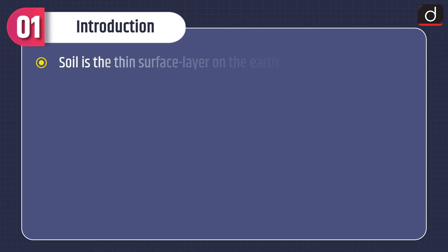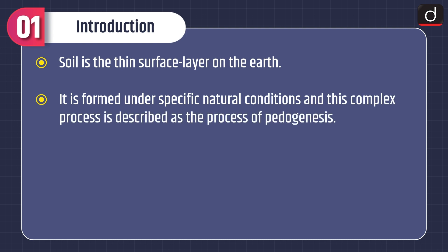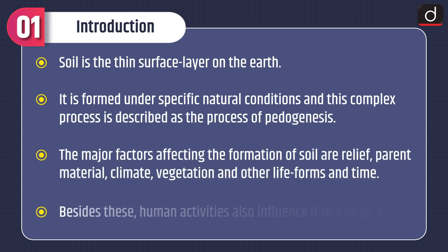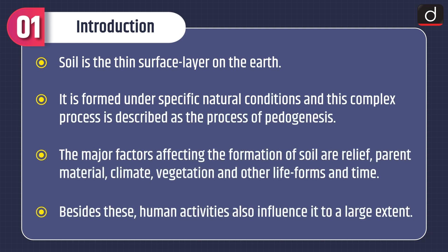Moving on to the introduction of the topic, soil is the thin surface layer on the earth. It is formed under specific natural conditions and this complex process is described as the process of pedogenesis. The major factors affecting the formation of soil are relief, parent material, climate, vegetation and other life forms, and time. Besides these, human activities also influence it to a large extent.